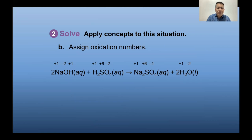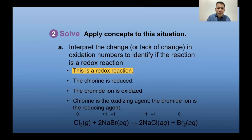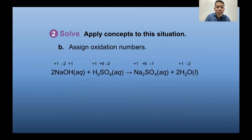So for example A: chlorine is reduced and is the oxidizing agent; bromine is oxidized and is the reducing agent. That answers the task of identifying which element is reduced, which is oxidized, which is the oxidizing agent, and which is the reducing agent. We can now move on to the second equation.